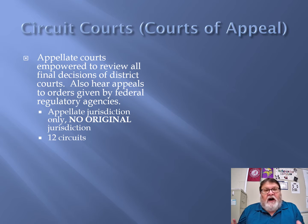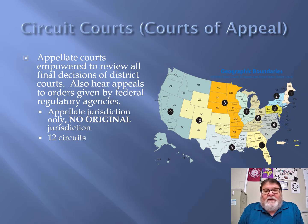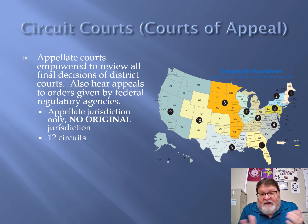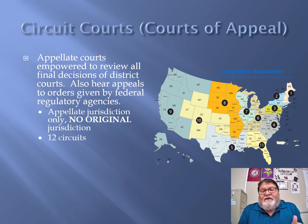There are 12 circuits, created by Congress — remember, Congress creates these courts, both the district courts and the circuit courts. Looking at the map, the big numbers are the circuits. You'll see only 11 of them on the map, and we'll explain the 12th on the next slide. We live in Georgia, so we're in the 11th Circuit, which consists of Alabama, Georgia, and Florida.